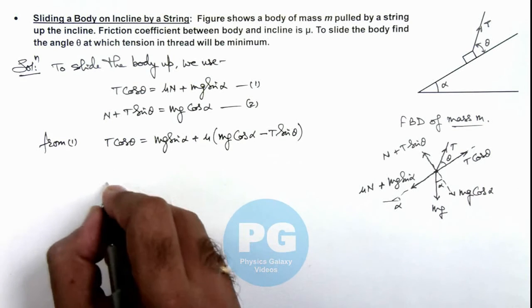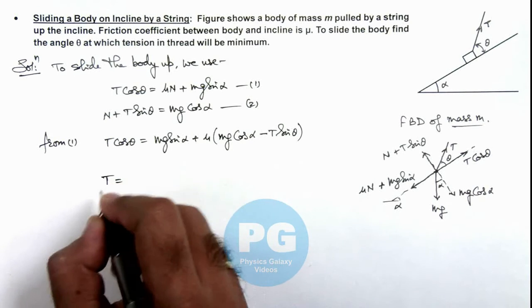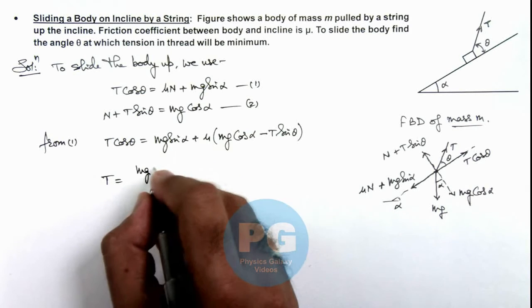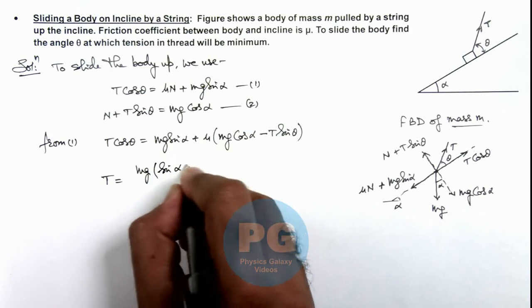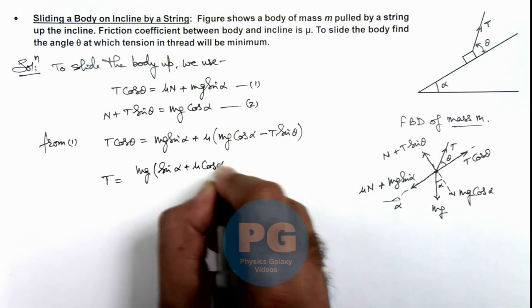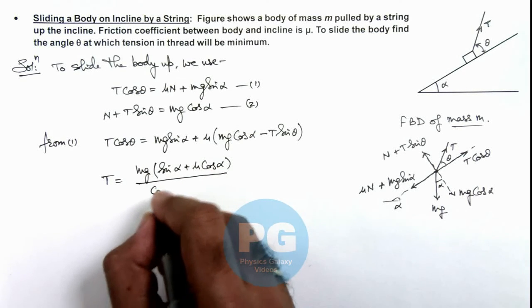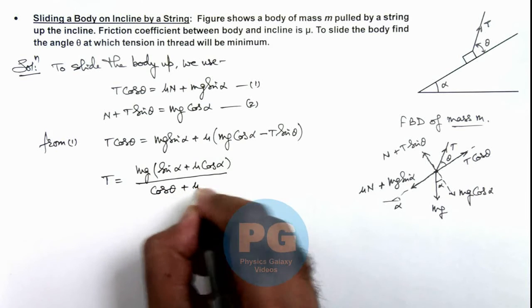If we further simplify it, we'll get the value of tension in string which is mg times (sin α plus μ cos α) divided by (cos θ plus μ sin θ). You can simplify and verify this result also.